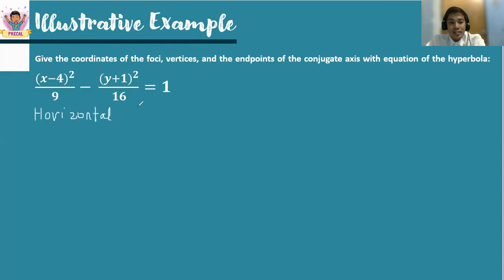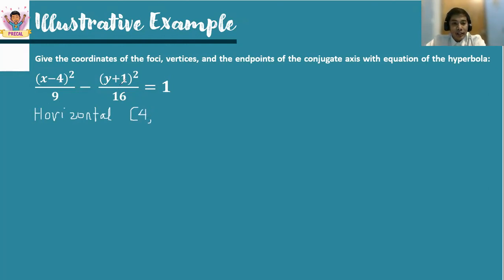Next is to identify the center. The center will be at HK. Since x goes along with the h value, we invert the sign of negative 4, so that is positive 4. And then we invert the sign of the k part — it's positive 1 in the formula, so it will become negative 1.